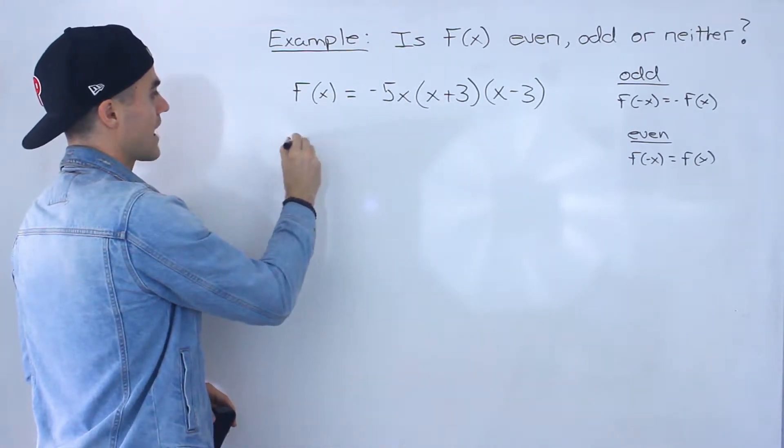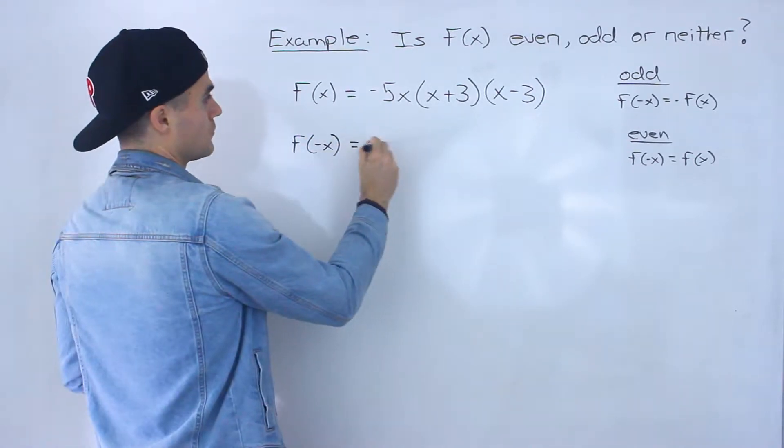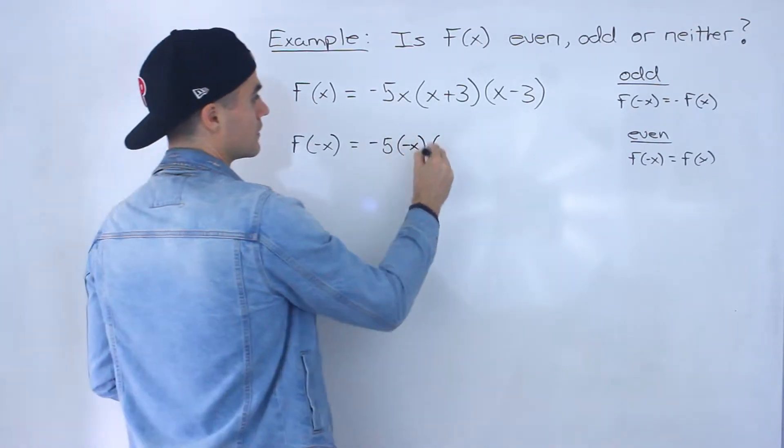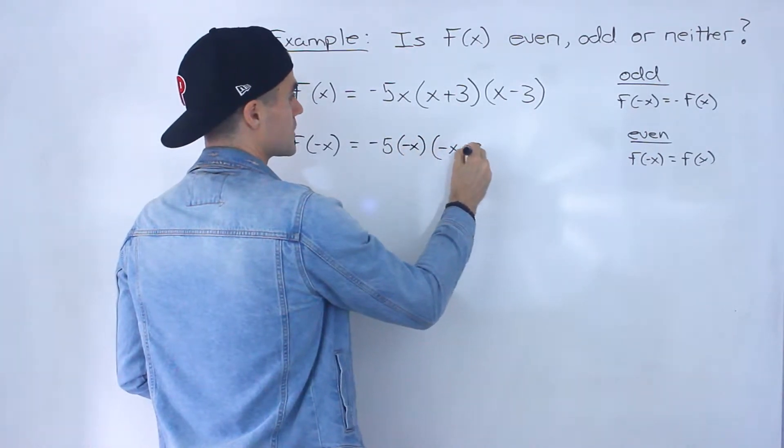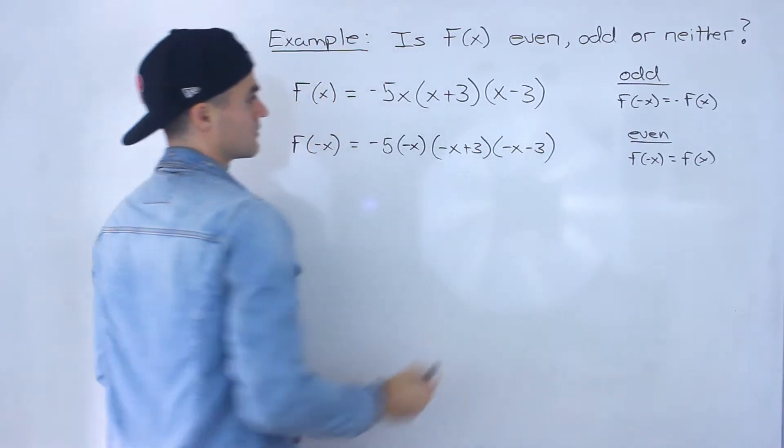What do we got to find? We got to find out what's f of negative x first. So what we would do is plug in negative x for all the x values: we have negative x over here, negative x plus 3 here, and then negative x minus 3 right there.